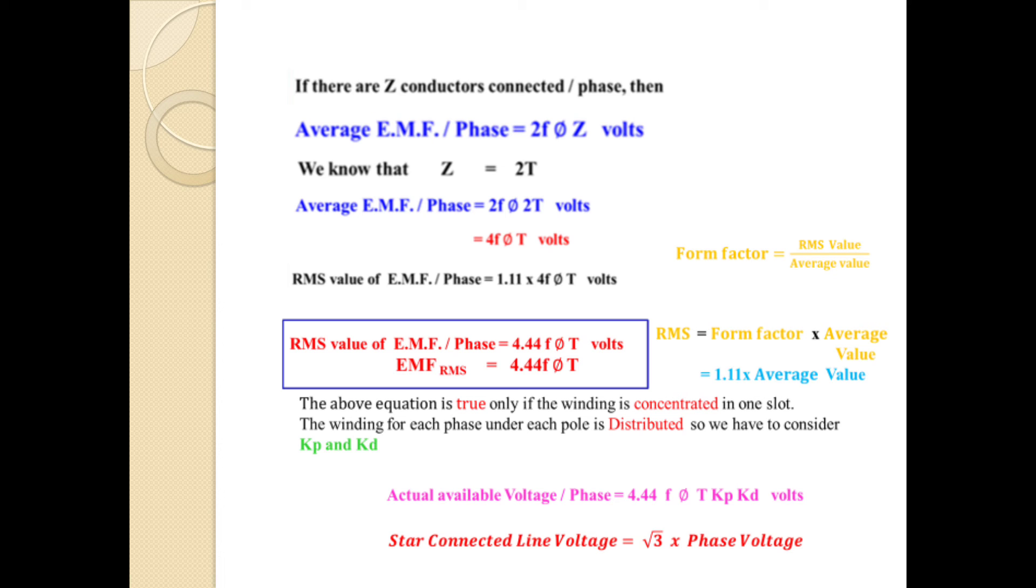Form factor formula is known from circuit theory: RMS value divided by average value. The RMS value of EMF per phase is 1.11 into 4FΦT volts. Therefore, RMS value of EMF per phase is 4.44FΦT volts. RMS value equals form factor times the average value, which is 1.11 into average value.